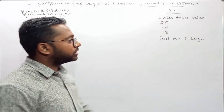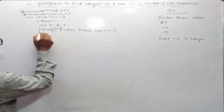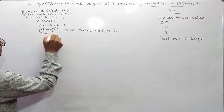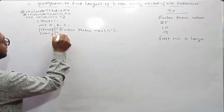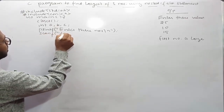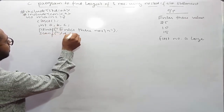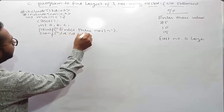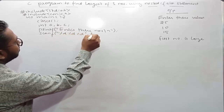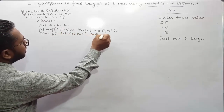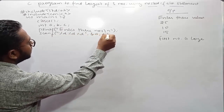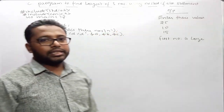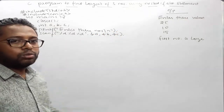Now I will declare these three variables of type integer: int a, b, c. Then I will display the input message and read those three numbers using the input function scanf with format specifiers: scanf("%d %d %d", &a, &b, &c).